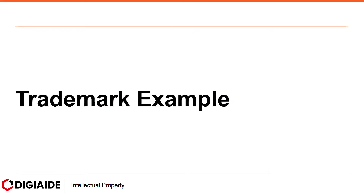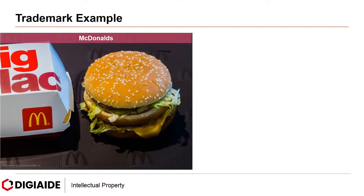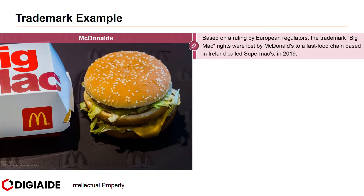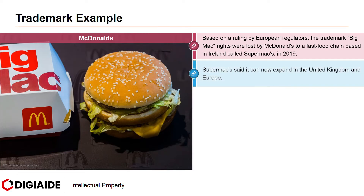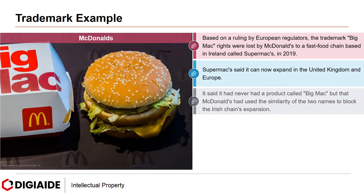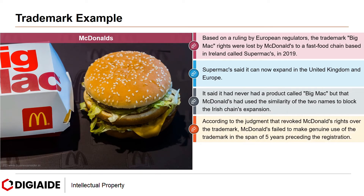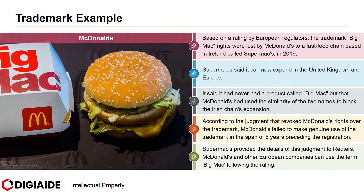Next, an example on Trademark. In this case, McDonald's. Based on a ruling by European regulators, the trademark Big Mac rights were lost by McDonald's to a fast-food chain based in Ireland called Supermac's in 2019. Supermac's said it can now expand in the United Kingdom and Europe. It said it never had a product called Big Mac, but that McDonald's had used the similarity of the two names to block the Irish chain's expansion. According to the judgment that revoked McDonald's rights over the trademark, McDonald's failed to make genuine use of the trademark in the span of 5 years preceding the registration. Following the ruling, McDonald's and other European companies can use the term Big Mac.